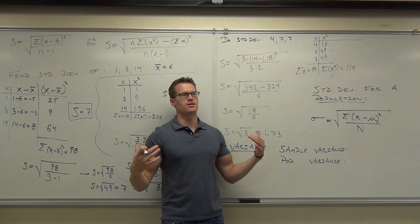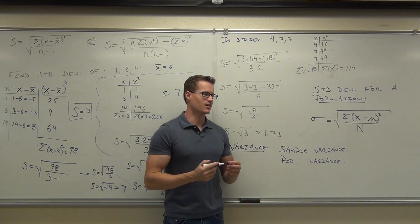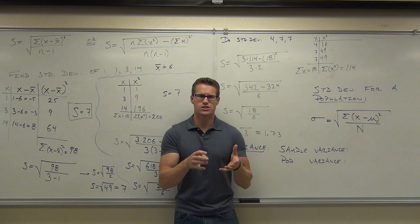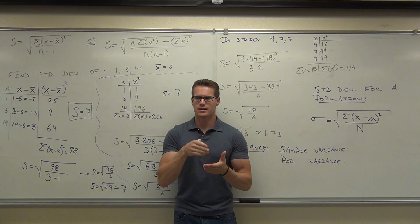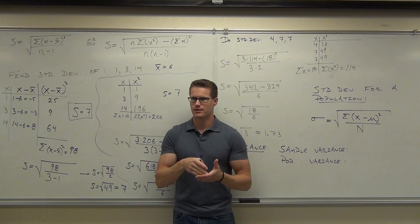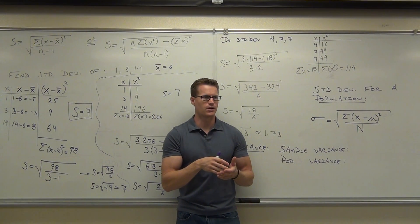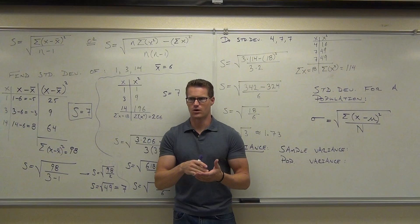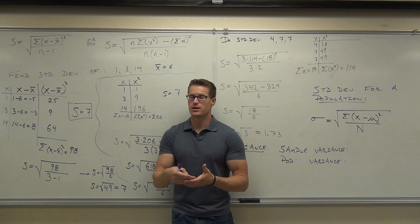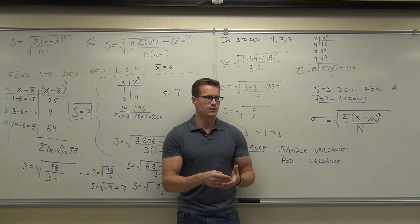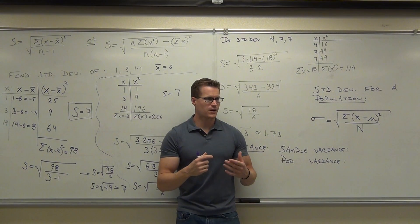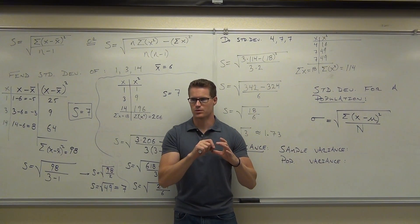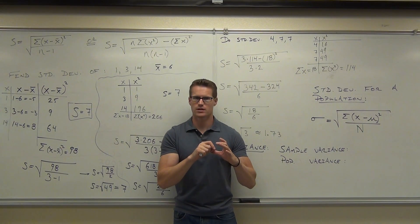Some of you are like, yeah, bring it on, whatever. But no, you probably don't. Here's the deal. If you've already calculated standard deviation, you've automatically calculated the variance. If you've already calculated the standard deviation, you've automatically already calculated the variance. Here's the variance. Watch on the board. The variance is the number that you have before you take the square root. Okay, that's all it is.